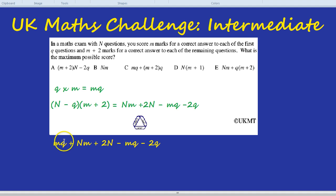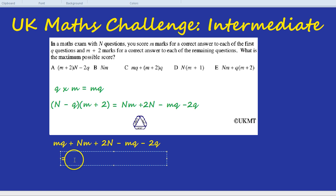That is our total marks. But you notice we have an MQ take away an MQ so that actually cancels out. And we're left with an NM still, a 2N still, and a take away 2Q. And that should be one of these options.